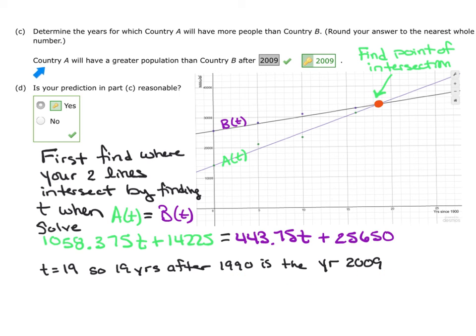So it wants to know when Country A will be greater than Country B. So if you recall, Country A for me was this line right here, and Country B was this line right here. I highlighted in yellow where A(T) is greater than B(T), so that is after the year 2009. Please let me know if you have any more questions on this section. See you next time.